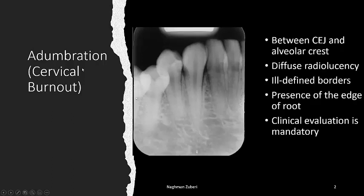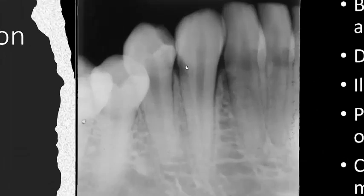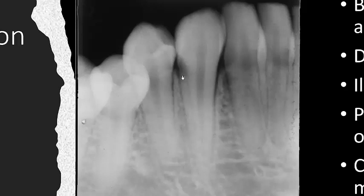This cervical burnout is present between the cementoenamel junction and the alveolar crest. It is a diffused radiolucency with some ill-defined borders and there is a presence of the edge of the root, which I am going to show you after enlarging. Though this area appears radiolucent, the continuity of the edge of root is always present. This is a very clear-cut diagnostic feature — we can say it is just a normal tooth where there is an artifact present, and that artifact is known as cervical burnout. There are no caries here.